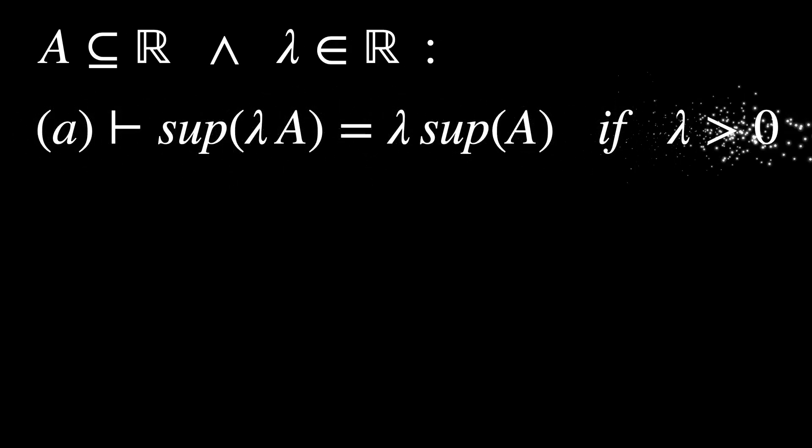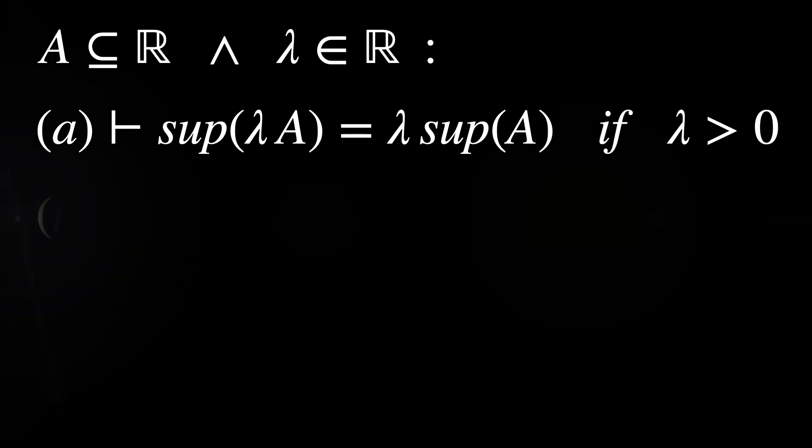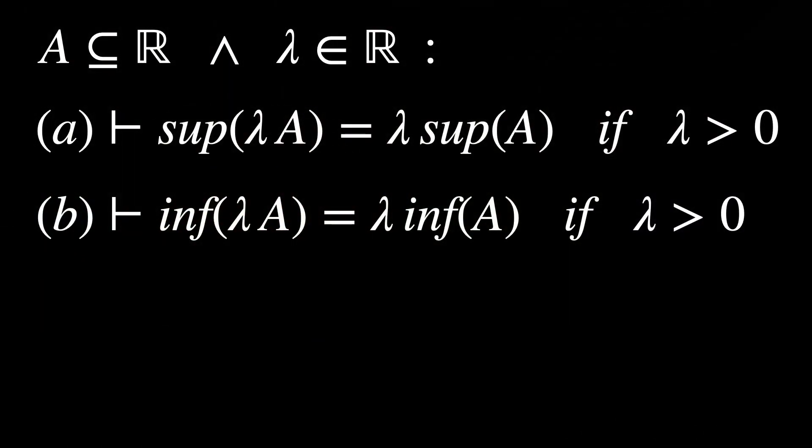Let A be a subset of the real numbers and let lambda be a real number. We want to prove that the supremum of the set lambda A equals lambda times the supremum of A, as long as lambda is greater than 0. We also want to prove that the infimum of the set lambda A equals lambda times the infimum of A, as long as lambda is greater than 0.